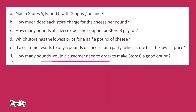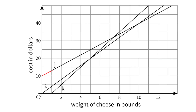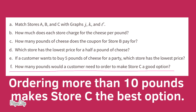How many pounds of cheese would a customer need to order to make Store C a good option? Line J represents Store C. Following line J left to right, it intersects line L and then intersects line K at ten pounds of cheese. If a customer were to buy more than ten pounds of cheese, Store C would be the best option.